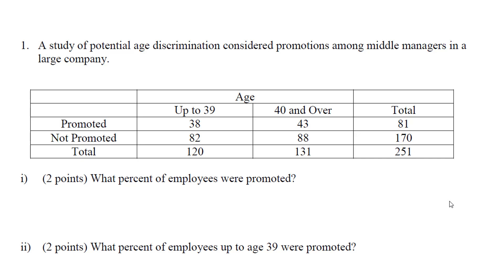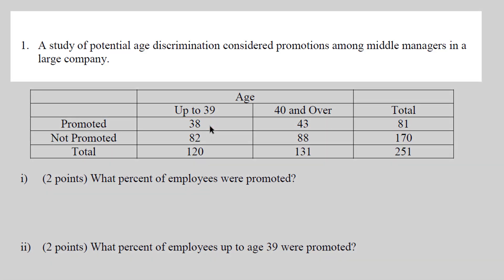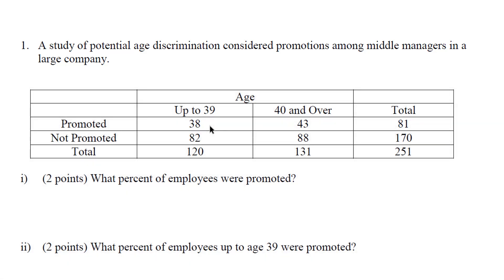This first question covers categorical data arranged in a contingency table. There were two questions asked: first, what the age was, with responses being 'up to 39' and '40 and over'; second, if someone was promoted or not promoted. An individual in this cell right here accounts for 38 individuals — all up to 39 years of age and promoted. This study of potential age discrimination considered promotions among middle managers in a large company.